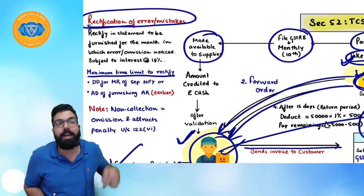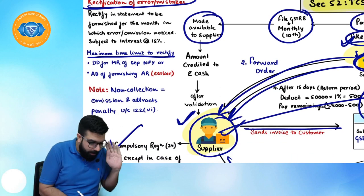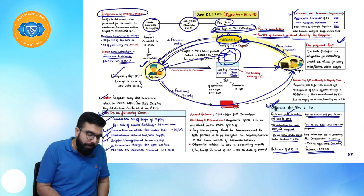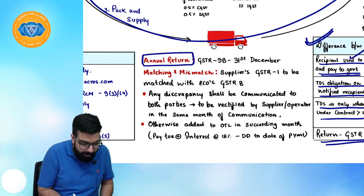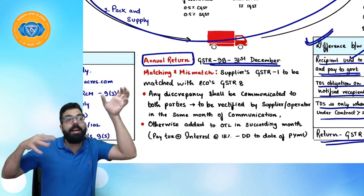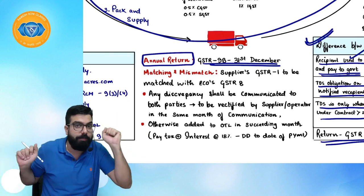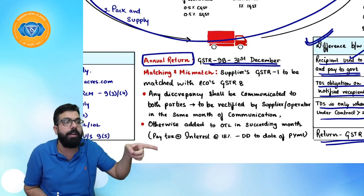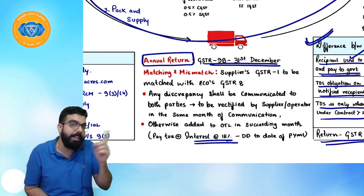The maximum time limit to rectify is the September month return of the next year or the date of filing the annual return, whichever is earlier. Non-collection or omission attracts penalty under Section 122. The e-commerce operator must also file an annual return in GSTR-9B by 31st December. The e-commerce operator's GSTR-8 is matched with the supplier's GSTR-1; any discrepancy is communicated to both parties. If not rectified in the same month, it is added to output tax liability in the succeeding month with interest at 18% from the due date of payment to the actual date of payment.